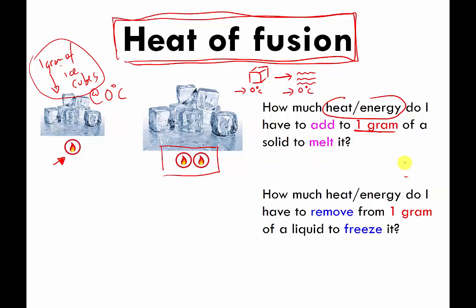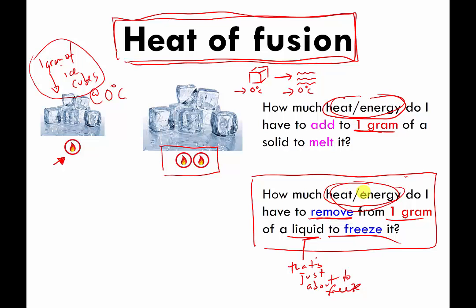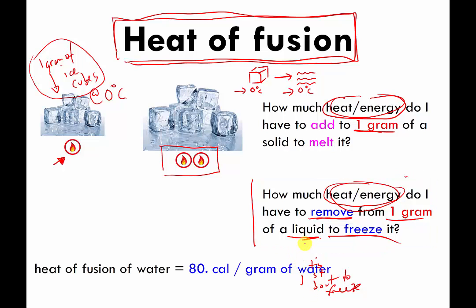You can think of it in reverse: how much energy do you have to remove from one gram of a liquid that's just about to freeze in order to freeze it? The amount of energy it takes to melt one gram equals the amount of energy released when you freeze one gram of the liquid — the energies are the same, just going in different directions. There are different numbers for different materials. For water, the heat of fusion is about 80 calories per gram.